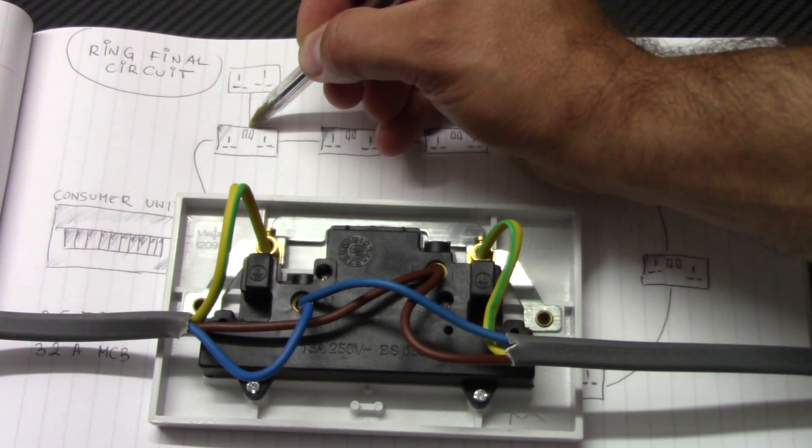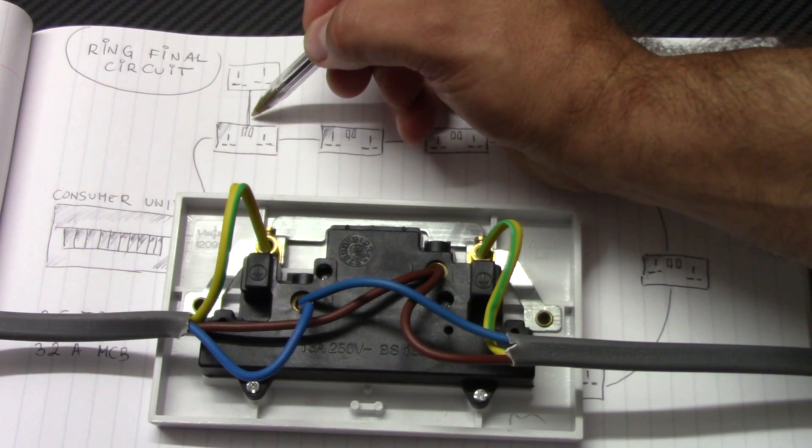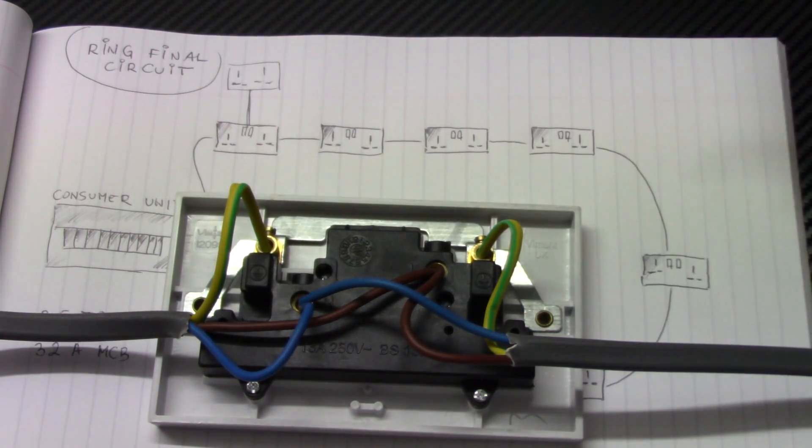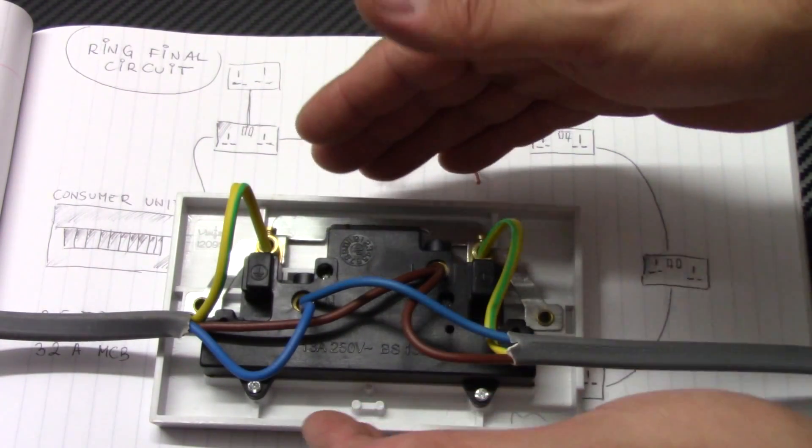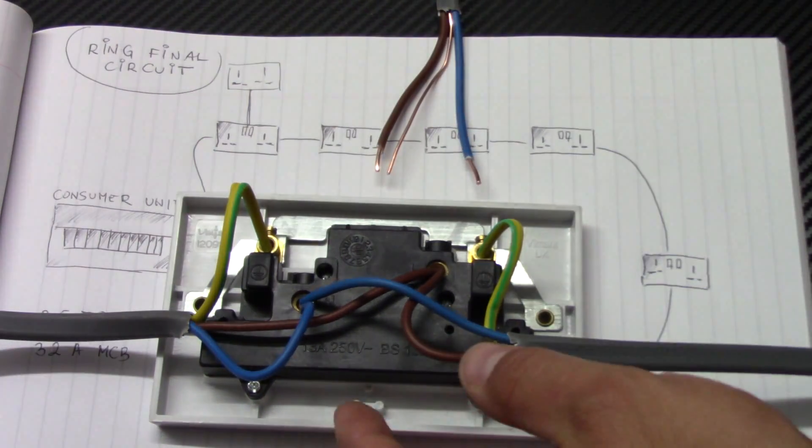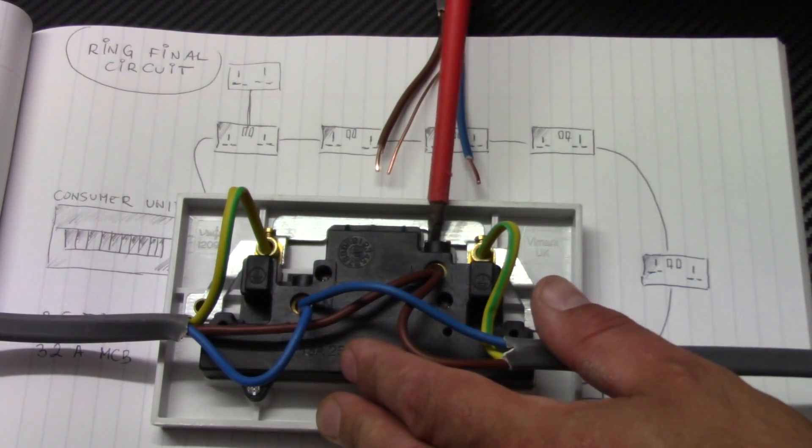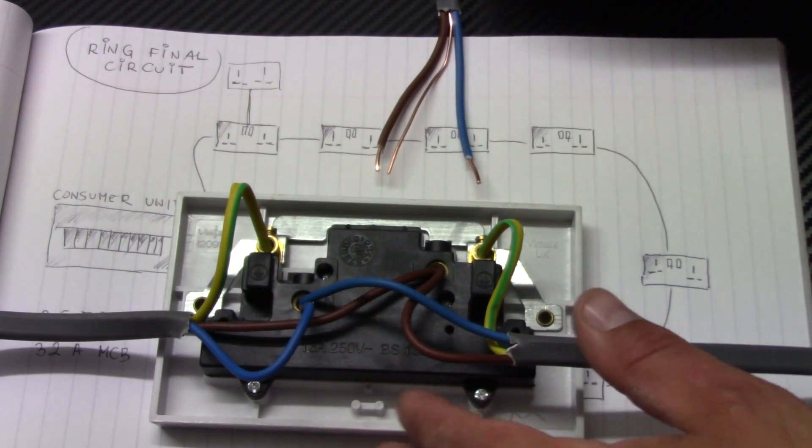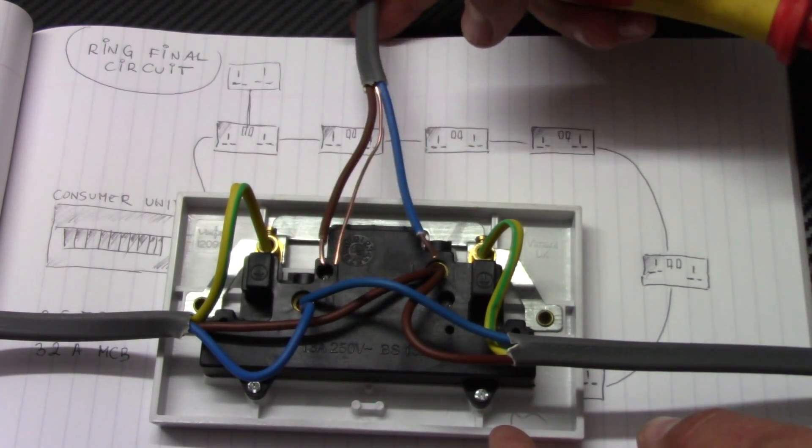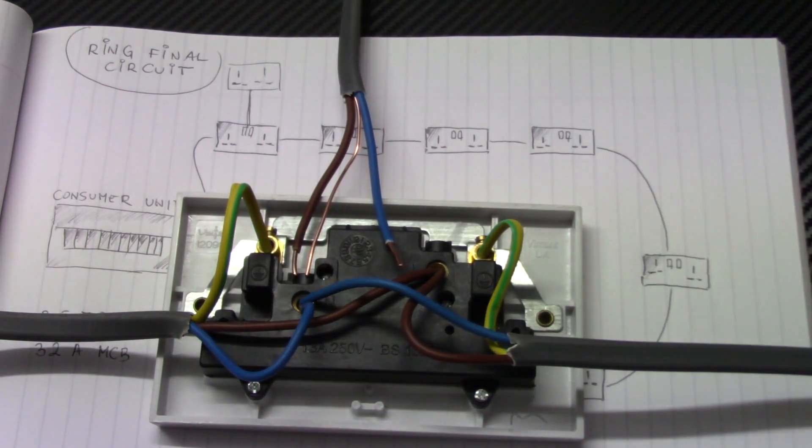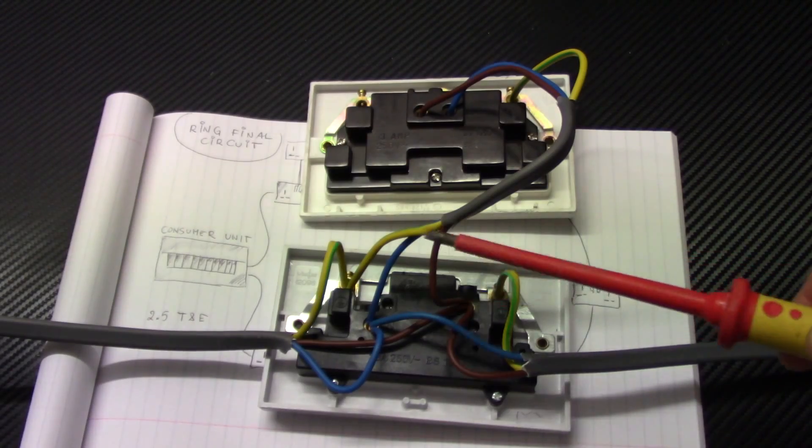So you link it together with the same wire, 2.5 twin and earth. How to do it? You just need to open the existing socket outlet, unscrew all of the wires, and add the third cable to this socket. So that's how it should look.